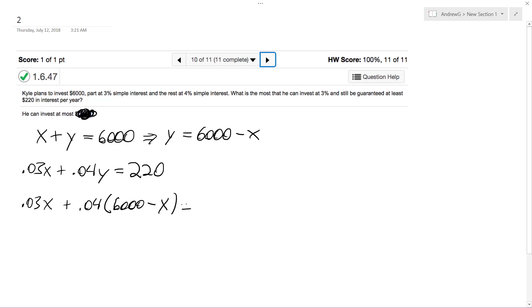All right, so it's 220. So 0.03X, keeping on with this, this is 240 I believe. 0.04, yep that's right, minus 0.04X is equal to 220. So what we get is negative 0.01X.